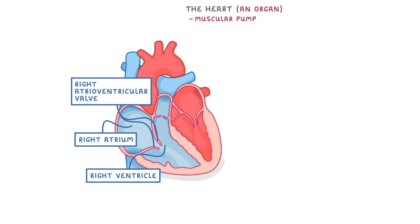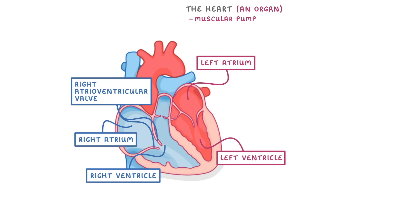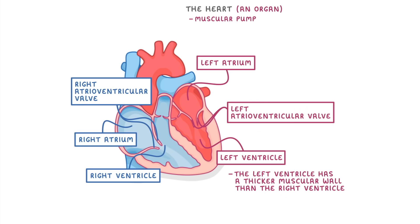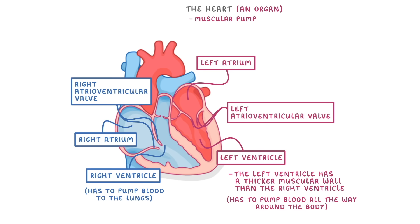Putting that together, the four chambers are the right atrium and the right ventricle with the right atrioventricular valve between them, and then the left atrium and the left ventricle with the left atrioventricular valve between them. You might also notice that the left ventricle has a thicker muscular wall than the right ventricle. This is because the left ventricle has to pump blood all the way around the body, whereas the right ventricle only has to pump it to the lungs, which are much closer.